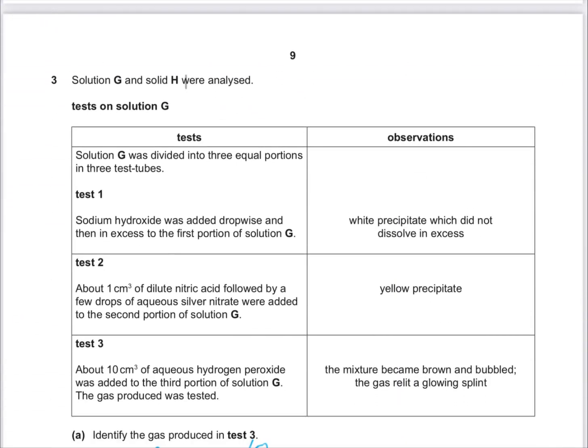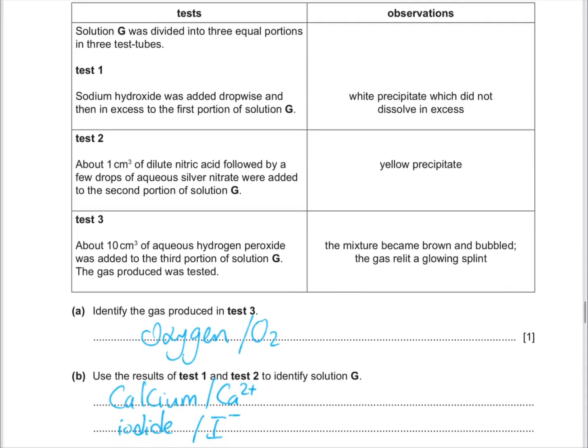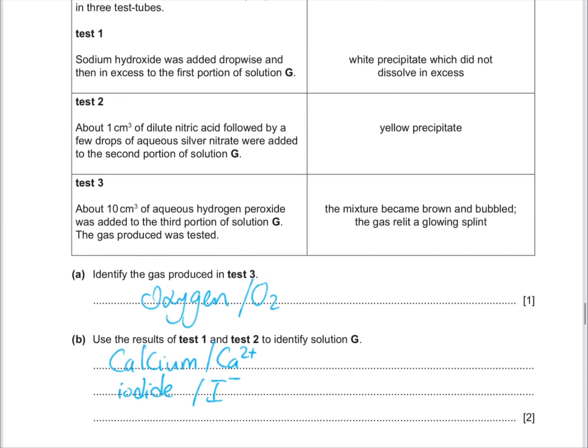Then we will test solution G and solid H. Test on G: solution G divided into three equal portions in three test tubes. Sodium hydroxide, drop-wise and then in excess. Then iodide is precipitated, and it is in excess. Then, dilute nitric and aqueous silver nitrate. So here we are going to add the iodide. Here we are going to add white precipitate. It didn't dissolve in excess. We are going to add calcium. And here we are going to add the iodide.